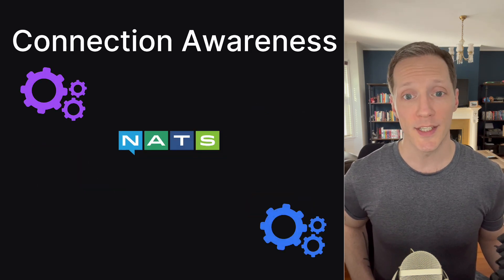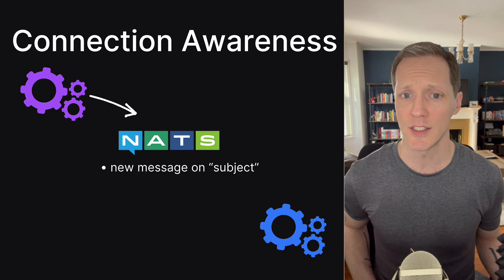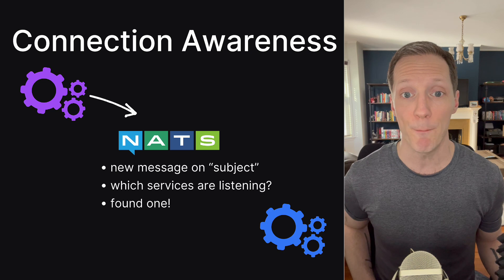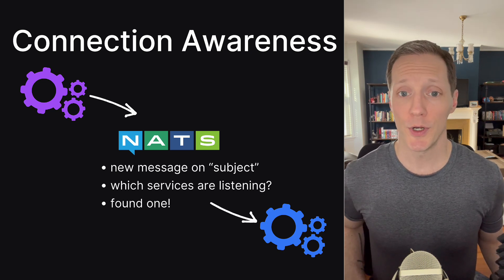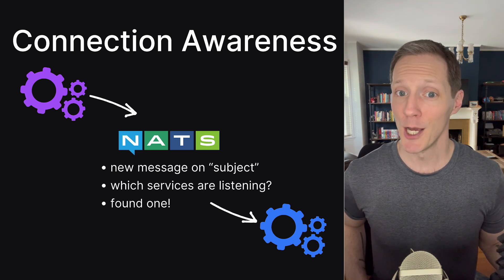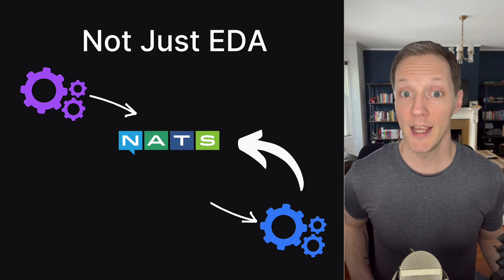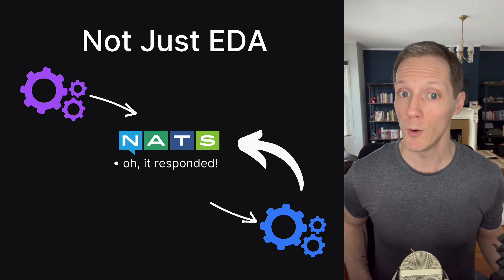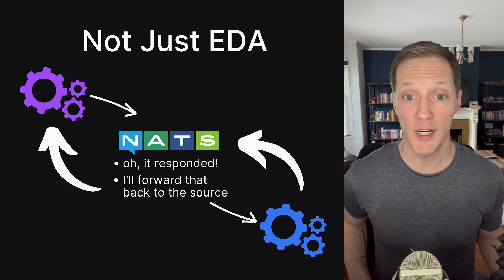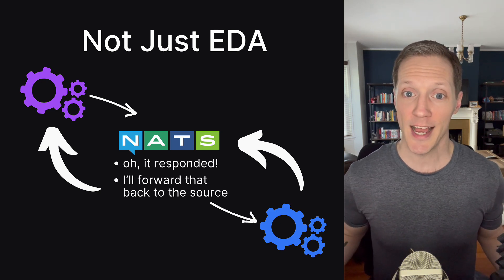NATS has connection awareness — it knows what's listening and what's not. When a message comes into a subject, NATS checks who's listening, and if it finds a subscribed service, it forwards that message. Now you might be thinking, that's just standard PubSub, nothing special. Yes, but here's where it gets really interesting: NATS can handle responses. If a subscriber responds on that same subject, NATS will forward that response back to the original source. So we're not just talking standard PubSub — we're talking about transactional messaging.